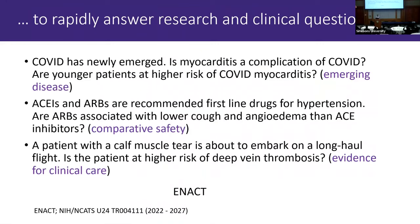Here are some real-world examples people have actually run on the network. One of the earliest was at the start of COVID: clinicians thought myocarditis was a complication of COVID and wanted to know whether younger patients are at higher risk for COVID myocarditis. This is an emerging disease kind of question, and I'll show you what we did on the network and how it lined up with what the CDC eventually did in a larger, deeper study.